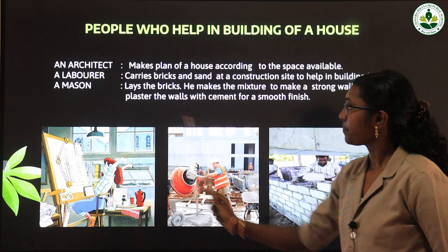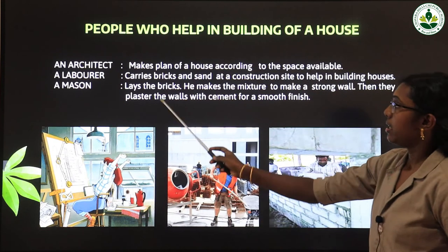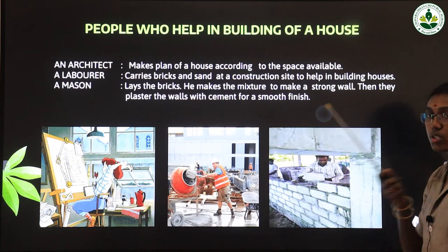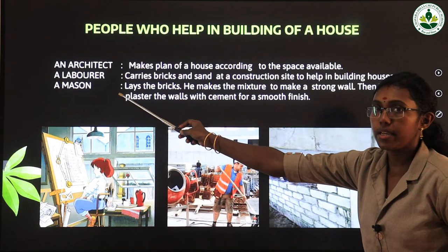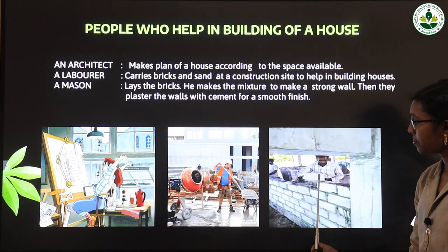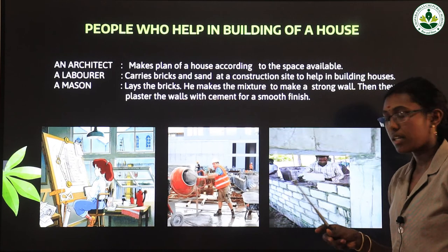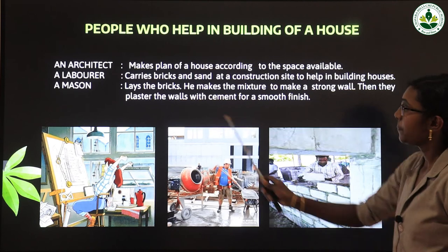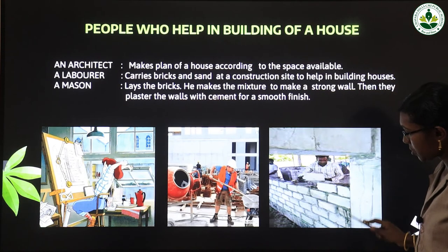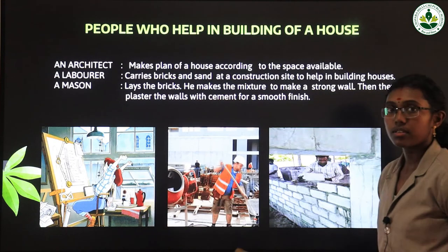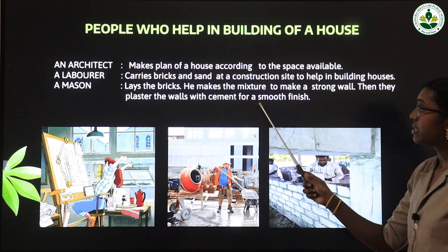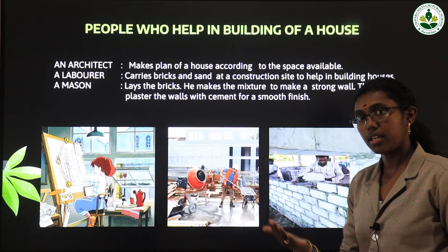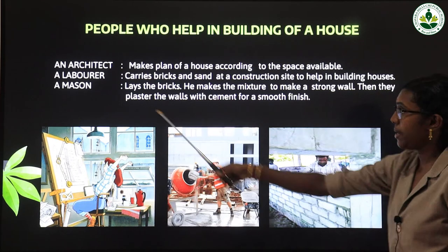Next is a mason. A mason lays bricks, makes the mixture to build a strong wall, and then plasters the walls with cement for a smooth finish. The mason is the main person who builds the house — keeping bricks and pasting a mixture of cement and sand between them. First the bricks are laid, then the wall is plastered with cement for a smooth finish.